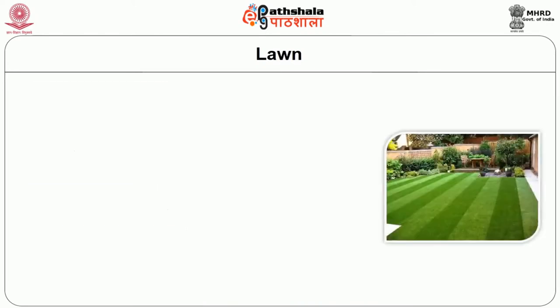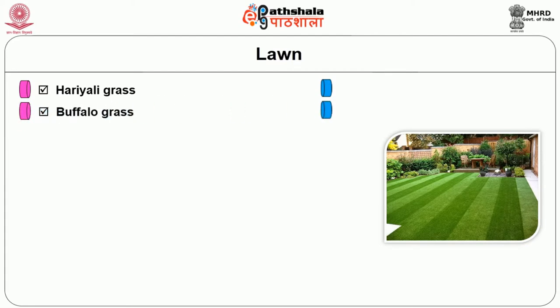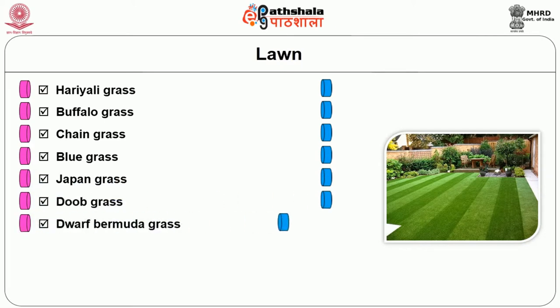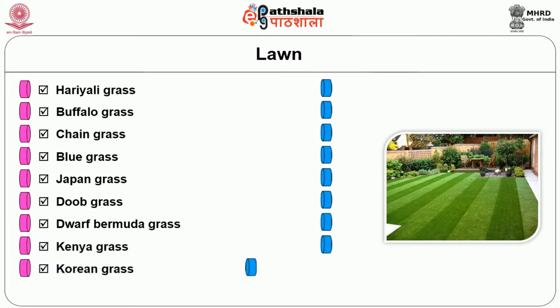The main grasses used for making lawns are Hariyali, buffalo grass, chain grass, blue grass, Japan grass, doob grass, dwarf Bermuda grass, Kenya grass, Korean grass and hybrid Bermuda grass. Nowadays, synthetic lawn made from synthetic fibers is also used. That is called astroturf.